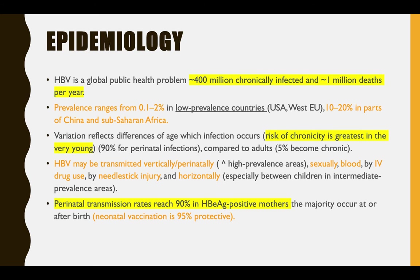If you get Hepatitis B, the younger you get it, the more likely you are to develop chronic infection. The main problem with HBV is chronicity. Chronic cases are more likely to advance to liver failure or hepatocellular carcinoma, more so in certain genotypes than others. Infection in children will more likely result in chronicity — up to 90% — rather than in adults.